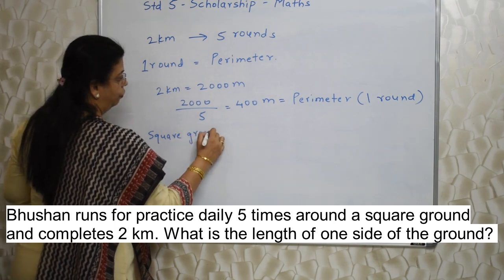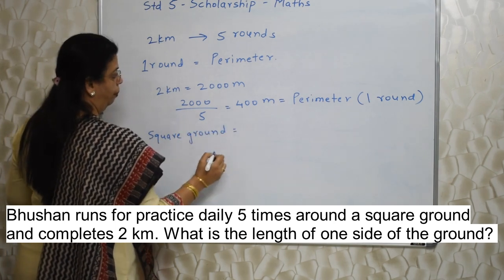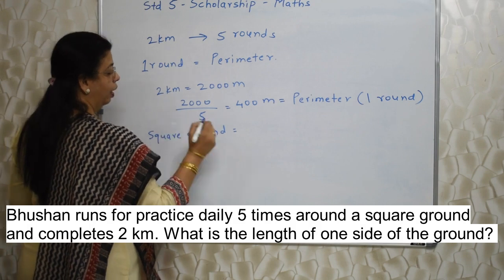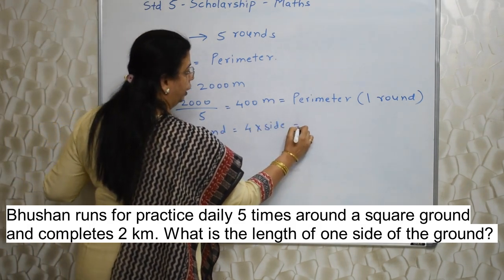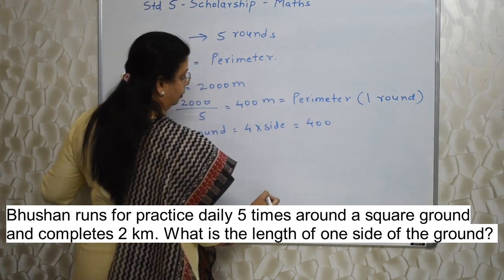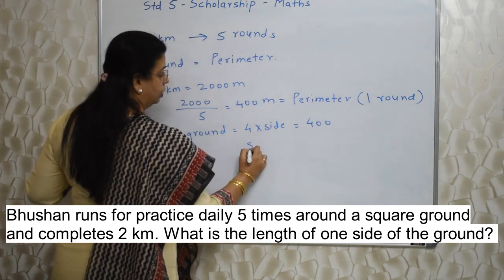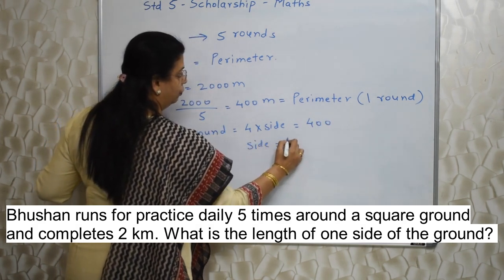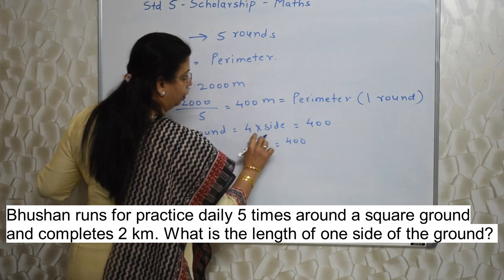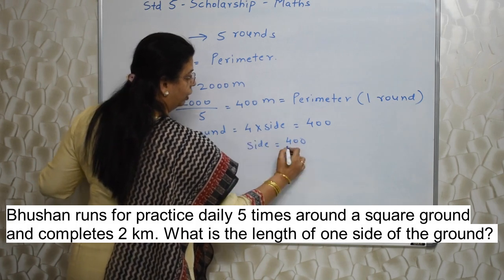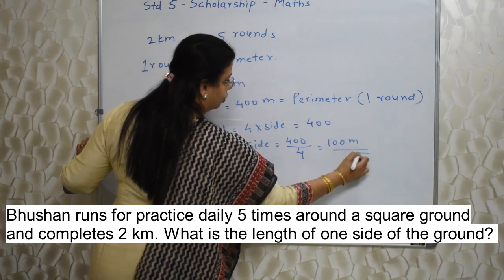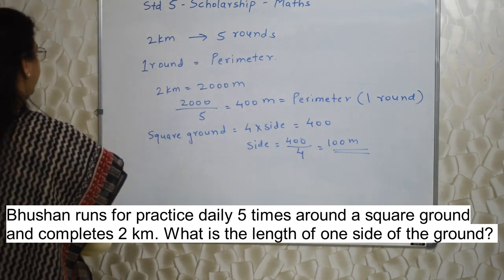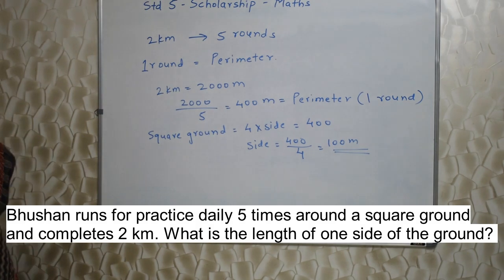The formula for the perimeter of a square is 4 into side. So 4 into side equals 400. Therefore side equals 400 divided by 4, which is 100 meters. So 100 meters is the side of that square ground. Very interesting!